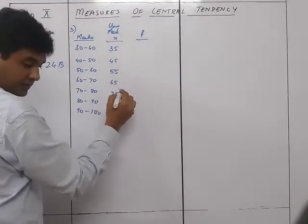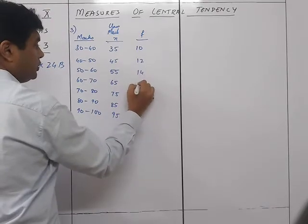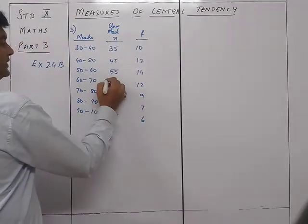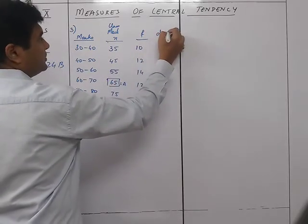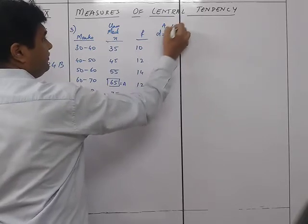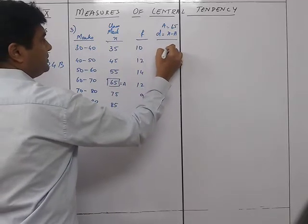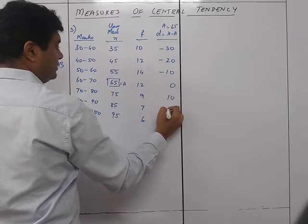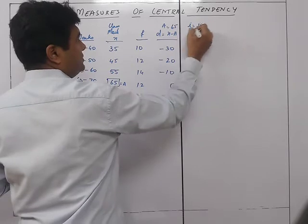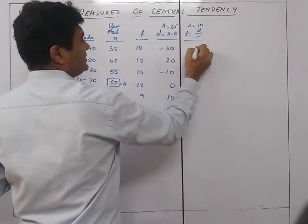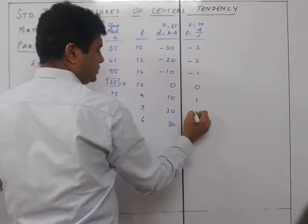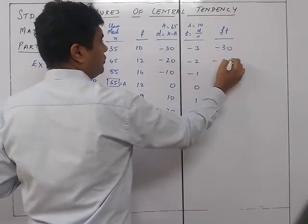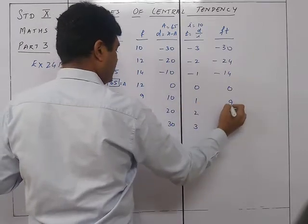The frequencies are 10, 12, 14, 12, 9, 7, 6. We take A = 65 as the assumed mean. D = x − A gives: −30, −20, −10, 0, 10, 20, 30. Since class width I = 10, T = D/I gives: −3, −2, −1, 0, 1, 2, 3.